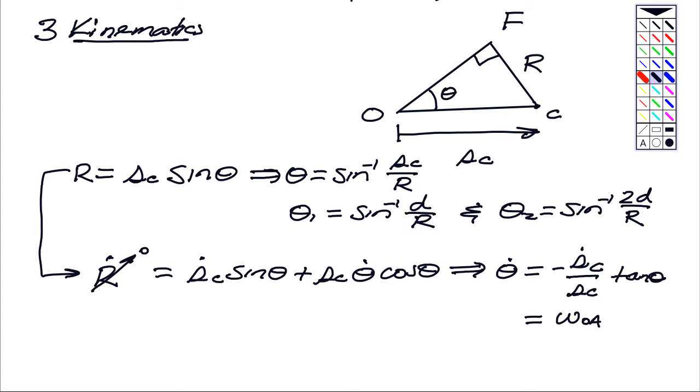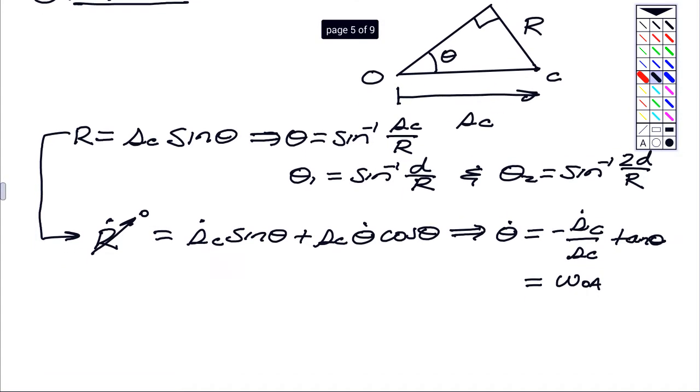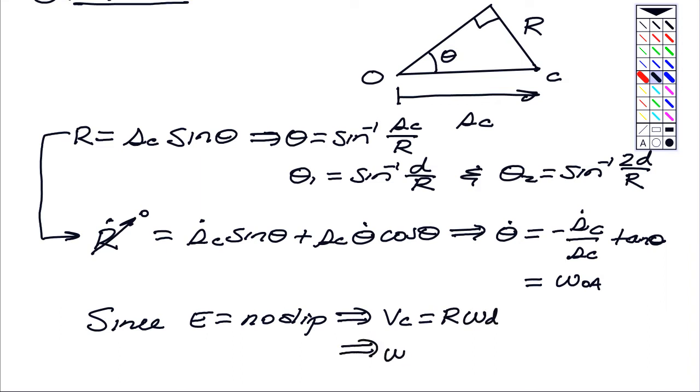Now, since E is a no-slip point, it says that the speed of C is equal to R times omega D. So therefore, omega D is equal to Vc divided by R.